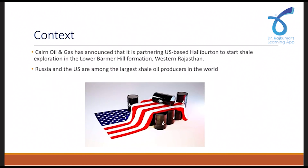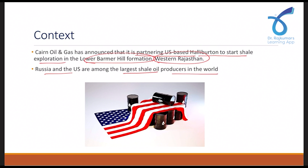Recently, Cairn Oil and Gas company announced that it is partnering with US-based Halliburton to start shale exploration in the Lower Barmer Hill Formation, which is present in western Rajasthan. Coming to the world scenario, the US and Russia are among the largest shale oil producers in the world. A few years back there was news that the USA increased its shale oil production, which helped fulfill nearly 20% of its demand for fossil fuels and energy.